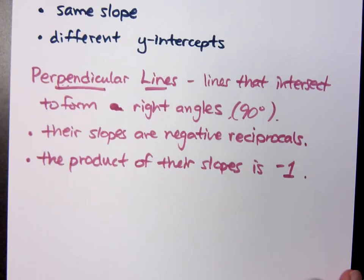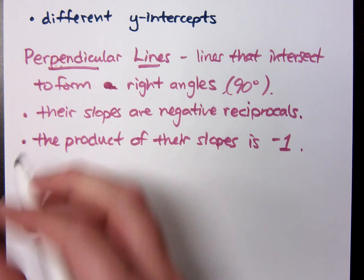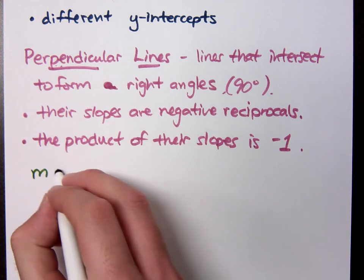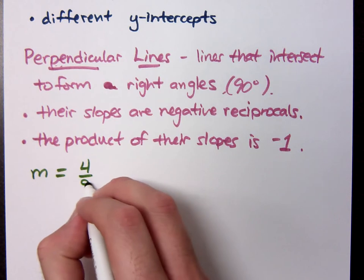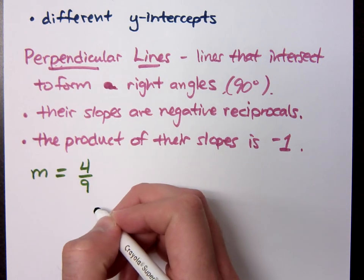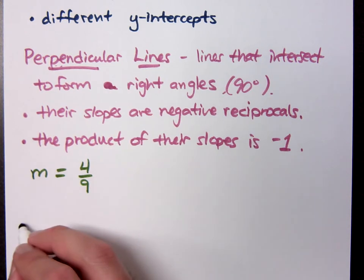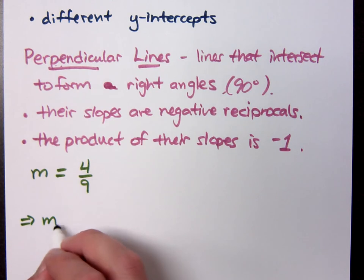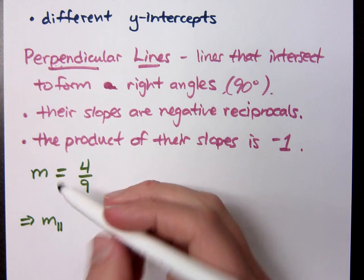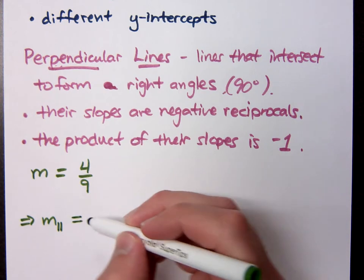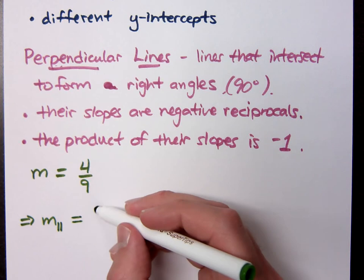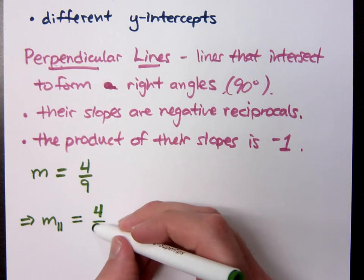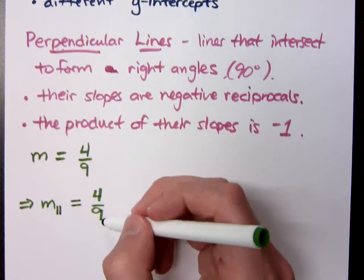So if I were to tell you this: if I say that the slope of a line is four ninths, then that means that its parallel slope - we'll denote it with those two vertical bars - what's the parallel slope if your original slope is four ninths? It still has to be four ninths, right?